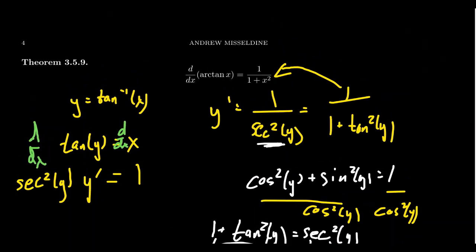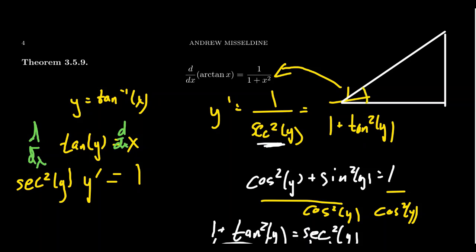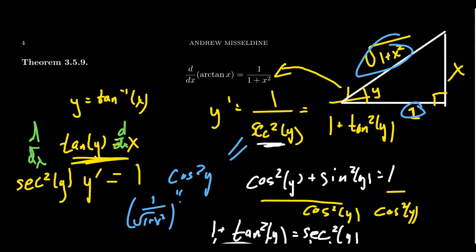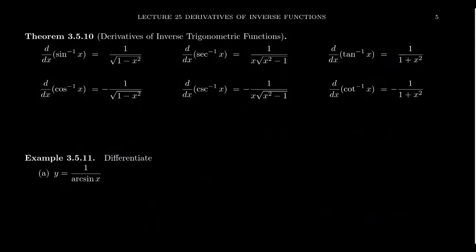We could have also done a triangle argument in this situation. For angle y, using the fact that tangent of y equals x over 1 — opposite over adjacent — the Pythagorean equation gives the hypotenuse as the square root of 1 plus x squared. Then 1 over secant squared is the same as cosine squared. Cosine is adjacent over hypotenuse, so you end up with 1 over the square root of 1 plus x squared, squared, giving 1 over 1 plus x squared. The basic strategy is the same: if we have the derivative of a function, we can compute the derivative of its inverse using implicit differentiation.